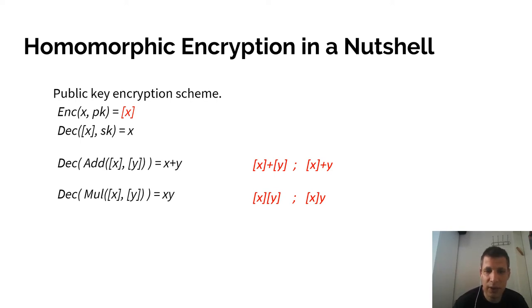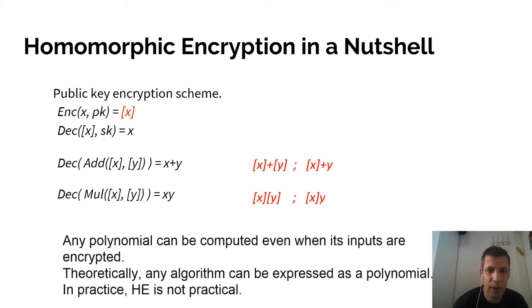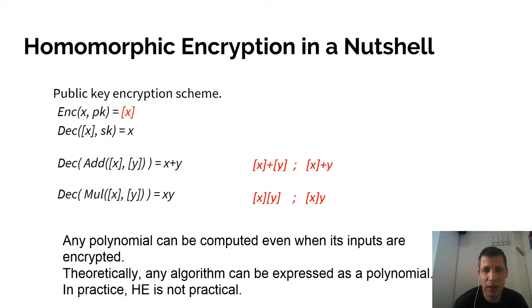Similarly, the mul function gets two ciphertexts of X and Y such that the decryption of the output is X times Y. As you can see, any polynomial can be computed over encrypted inputs, and theoretically any algorithm can be expressed as a polynomial. In practice, people will tell you that homomorphic encryption is not practical.